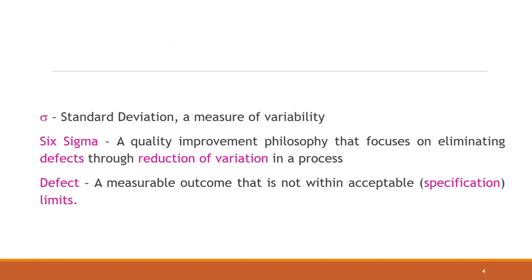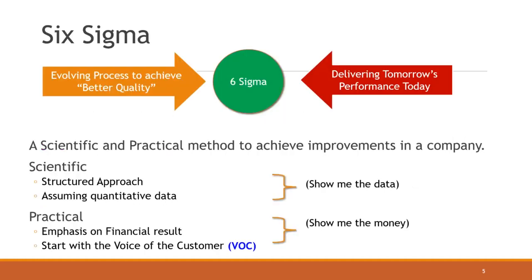Sigma means standard deviation — it's a measure of variability. Six Sigma is a quality improvement philosophy that focuses on eliminating defects through reduction of variations in a process. Defects are measurable outcomes that are not within acceptable or specification limits. Six Sigma provides organizations tools to improve business process capability, increasing performance and decreasing variation, which leads to improved profits, employee morale, and quality of products and services.